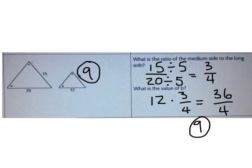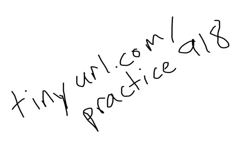So to find missing side lengths in similar triangles, I can use the relationships between the sides just like I can use the scale factor between the two figures. You've done a great job on this video. Now go to tinyurl.com/practice918 to continue to practice. Thanks, guys.